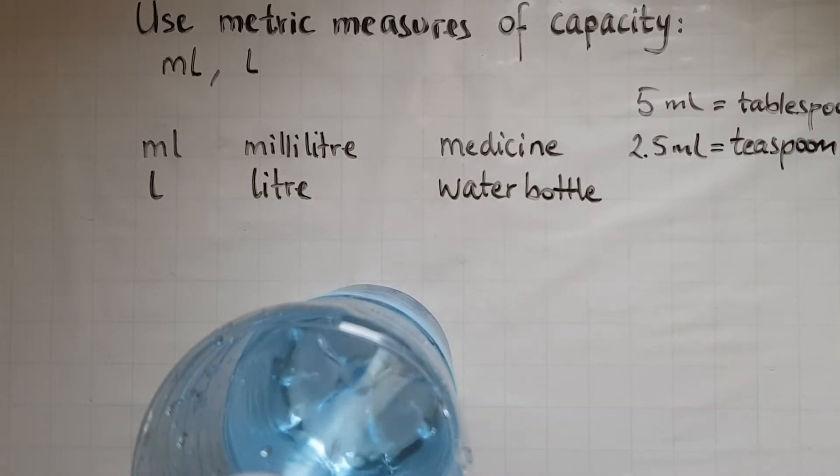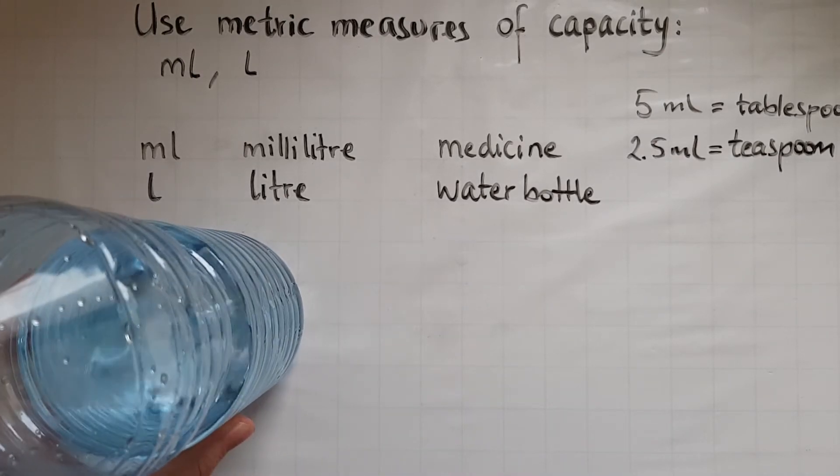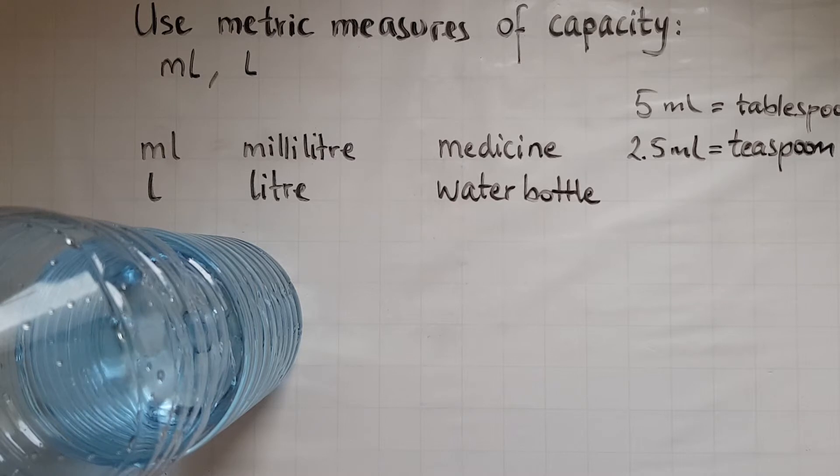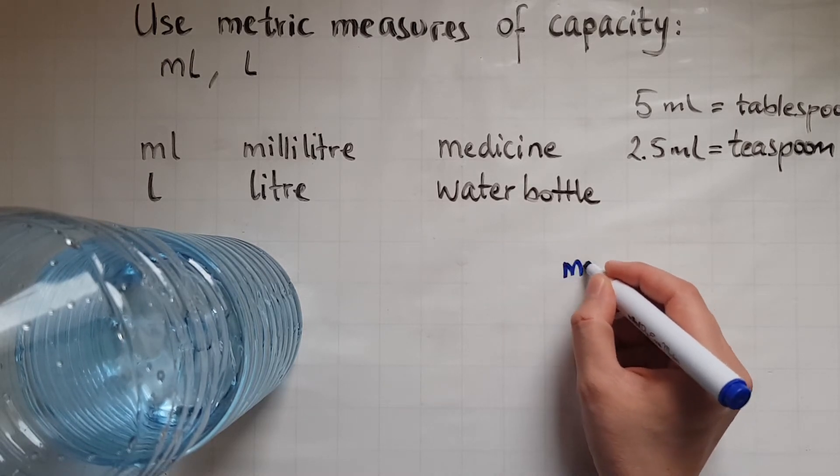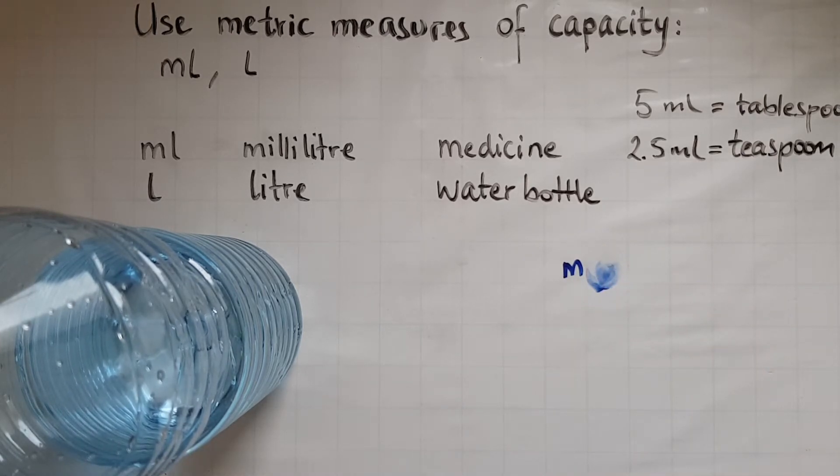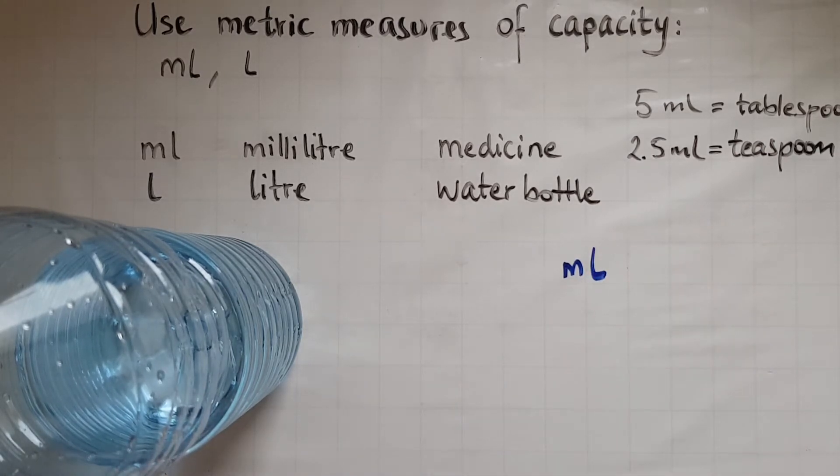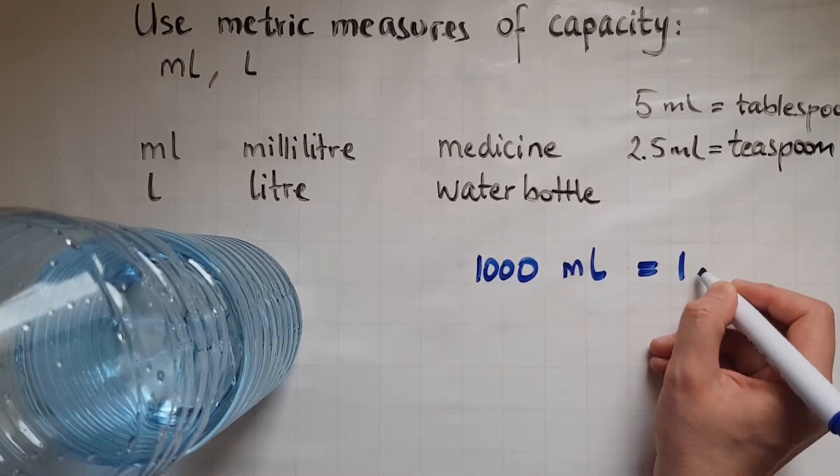So a water bottle is about a liter. And I will try and write some clues to help us remember now how many in each of them. So, milliliter - that is a very small amount. There are a thousand milliliters in one liter. So a thousand milliliters makes one liter.